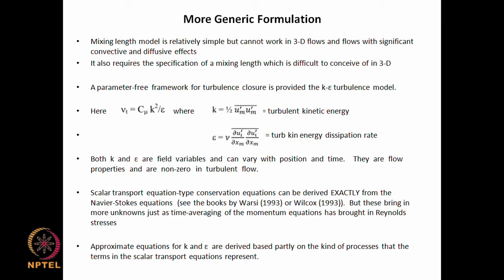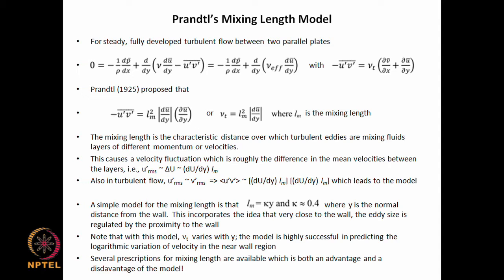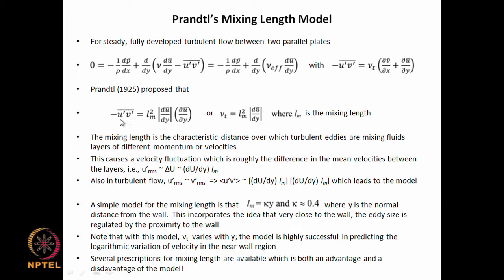Another big disadvantage of the mixing length model is that it says whatever turbulence is there, it is because of the local velocity gradients. The mixing length model attributes the presence of Reynolds stresses to a local velocity gradient, as seen in the expression for u prime v prime bar involving du/dy. So if there is no velocity gradient, there is no stress, and if there is a stress there must be a velocity gradient — this is a limitation which is not necessarily true in all cases.